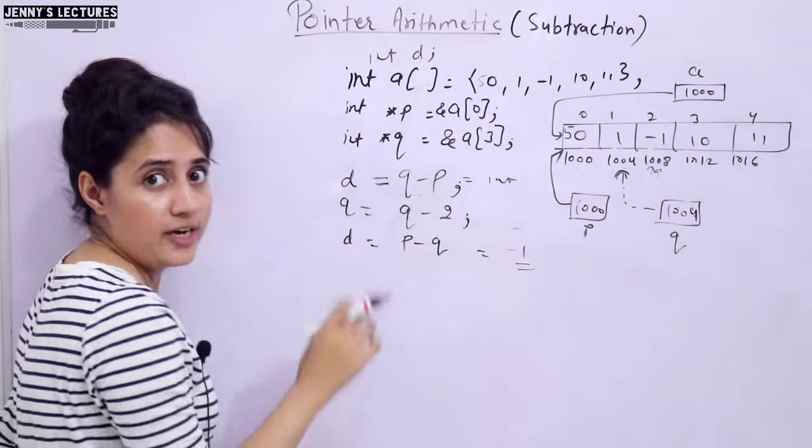Running the program: Q minus P is 3 and P minus Q is minus 3. P is pointing to the first element and Q is pointing to the fourth element at index 3, which has value 0. They are 3 elements apart, which is why Q minus P is 3 and P minus Q is minus 3.